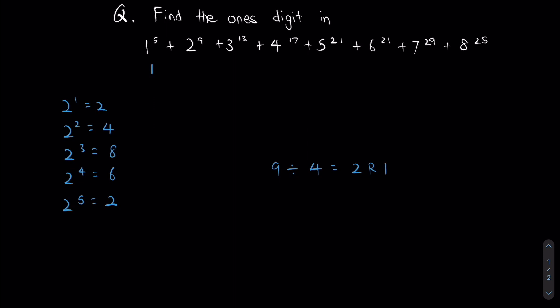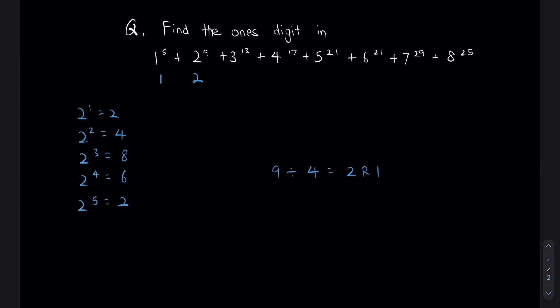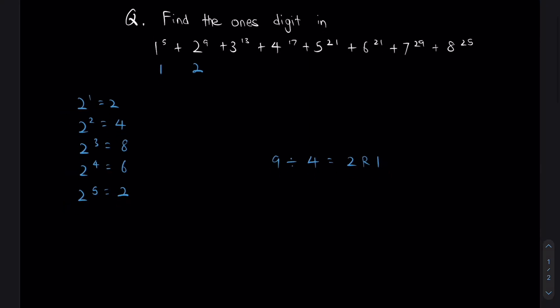So the ones digit for 2 to the power of 9 would be 2. So now what we are going to do is repeat this process for the rest of the numbers. But don't worry, not every single number has such a complicated ones digit.